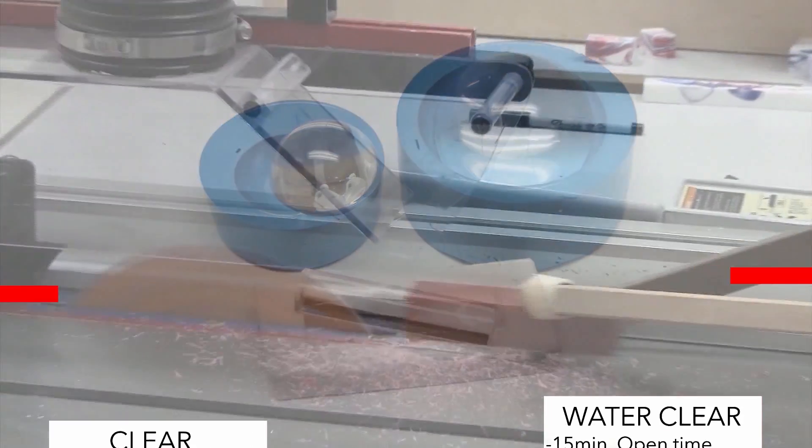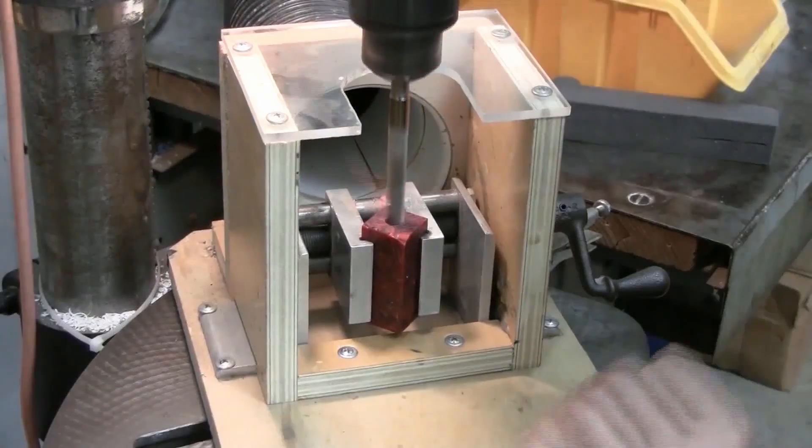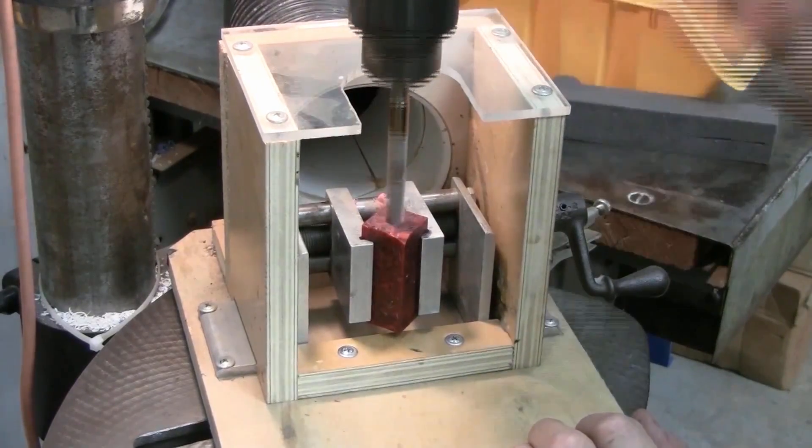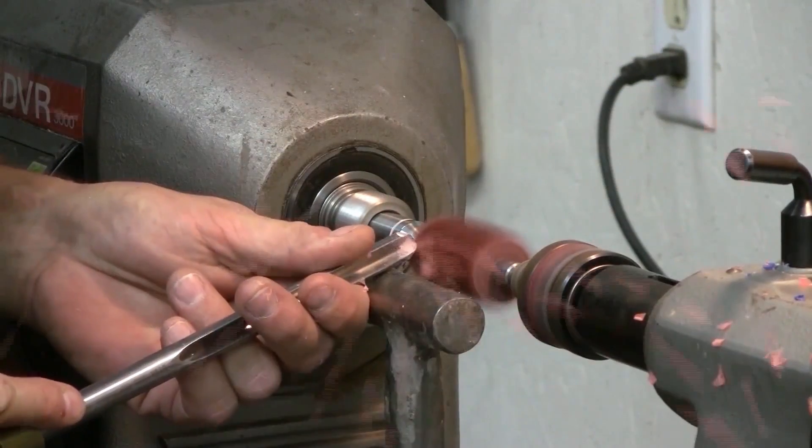In their cured state, both of these systems can be sanded, tapped, drilled, or polished. Here you'll see a pen turning application where Alumilite Clear is polished to a high gloss.